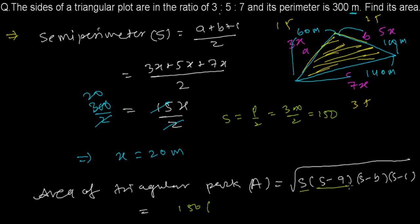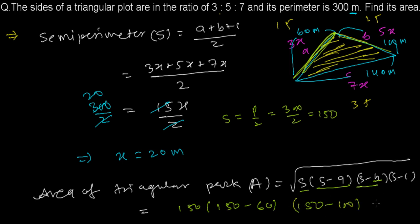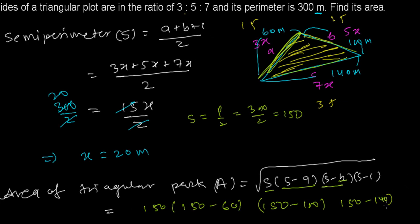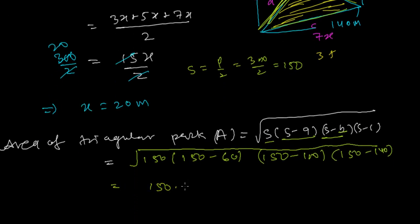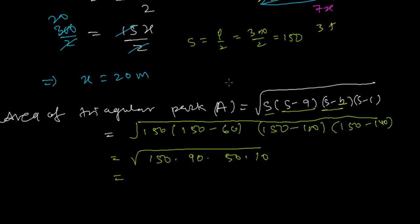Now we compute: s − a = 150 − 60 = 90, s − b = 150 − 100 = 50, and s − c = 150 − 140 = 10. So the area = √(150 × 90 × 50 × 10).